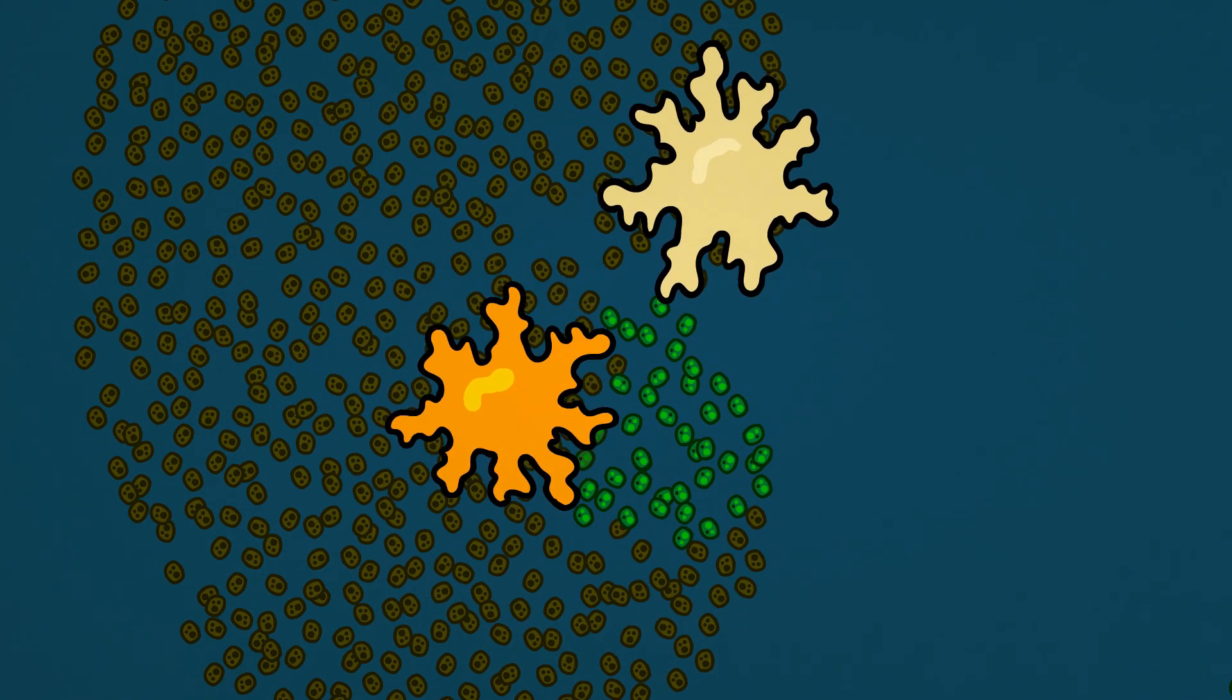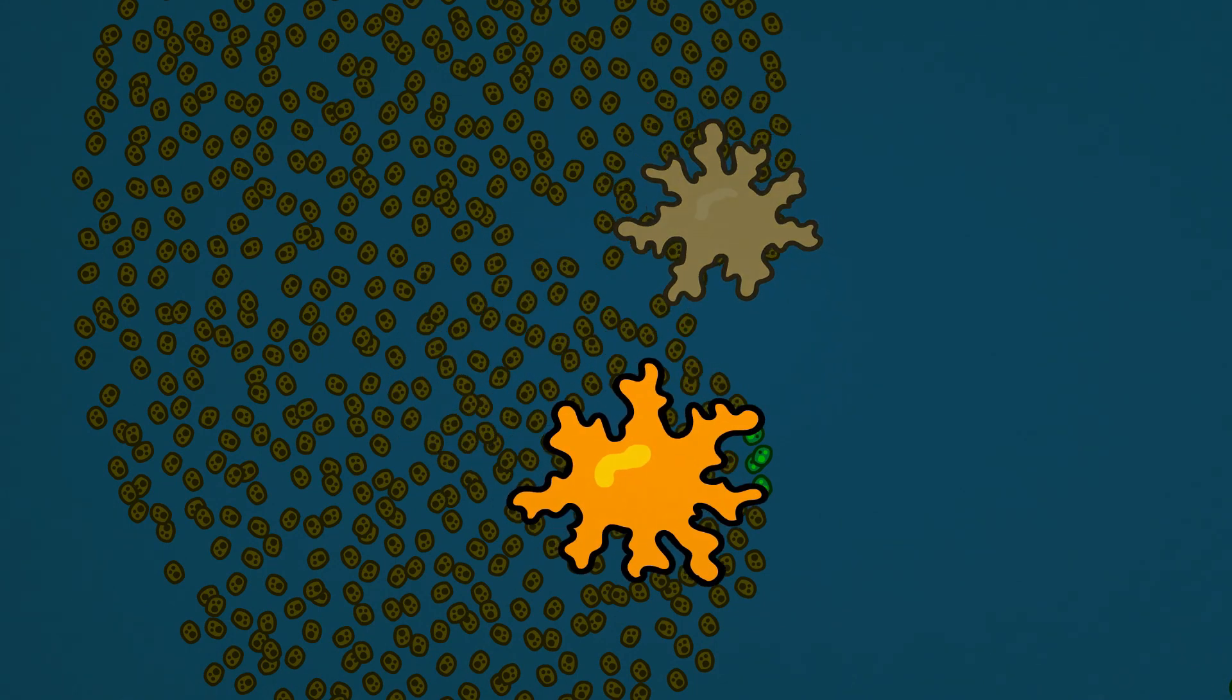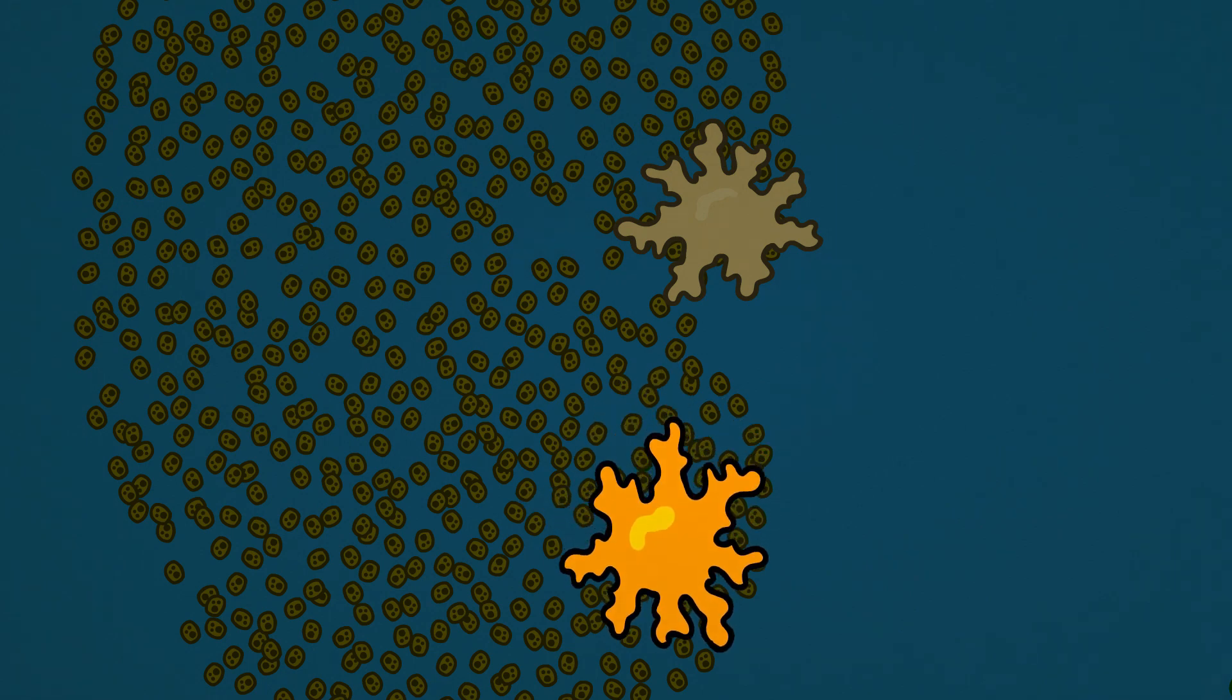Here, fast-eaters will still out-compete slow-eaters if they happen to find themselves on the same patch of food. Once the algae is gone, however, the fast-eaters will starve.